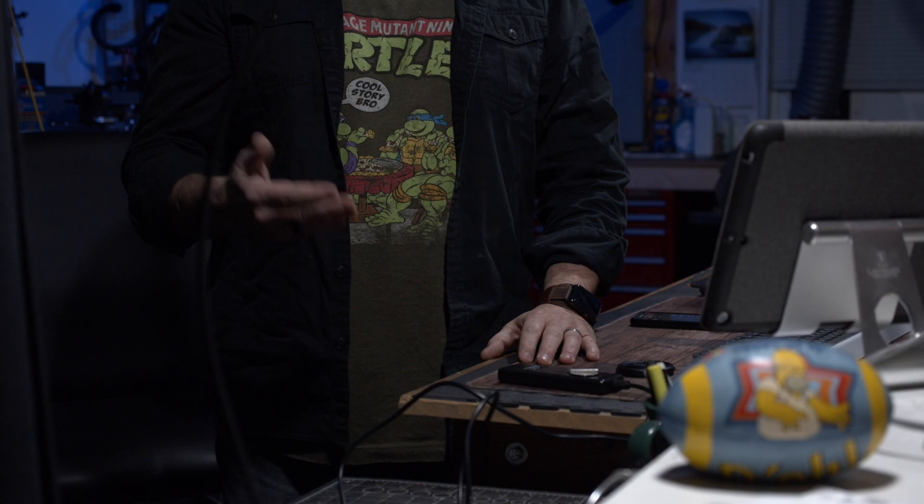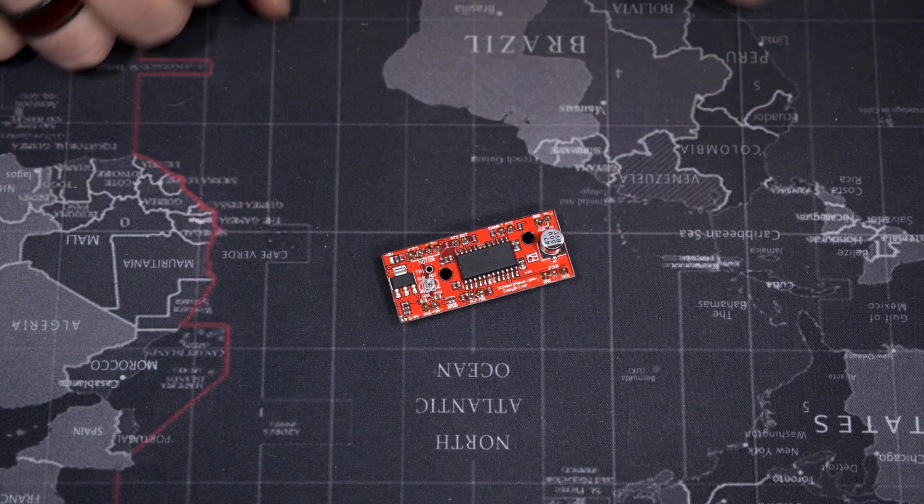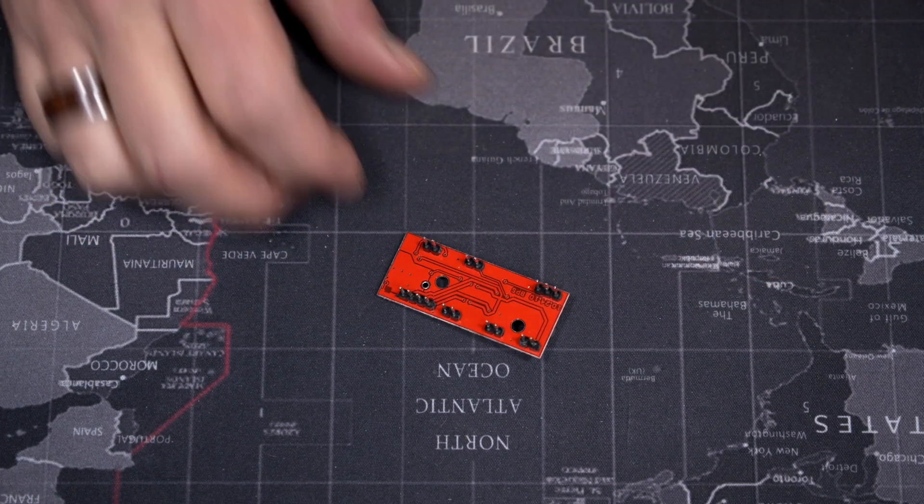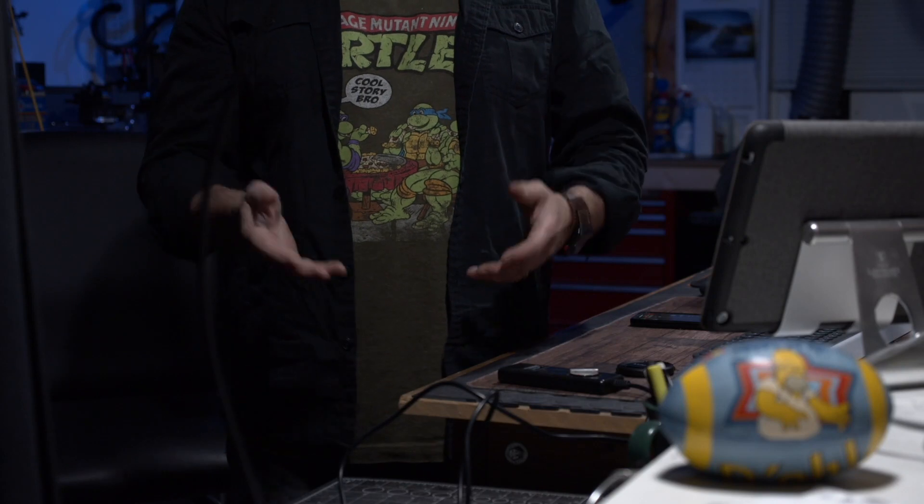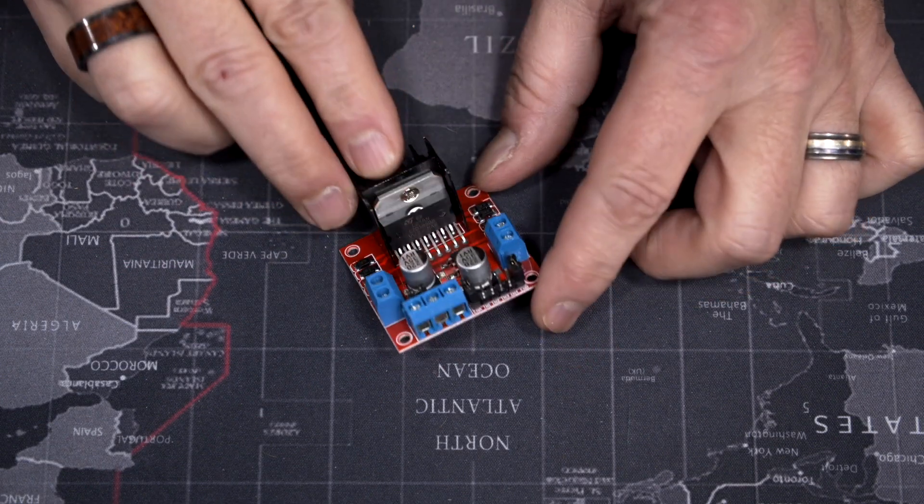Today I'm going to look at a way to control a stepper motor with an Arduino. Now I've done a lot of tutorials on how to control stepper motors and for some reason I always used the EZ driver and that's not the only one you can use. There's a bunch of them out there and the one we're going to look at today is a very simple and very affordable L298N.